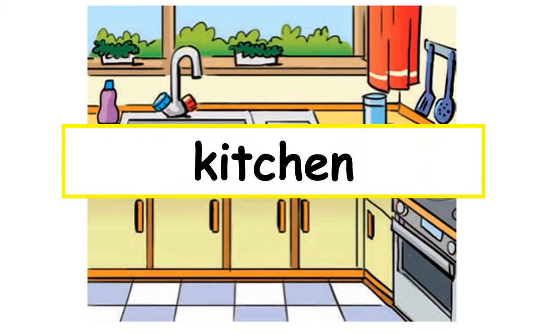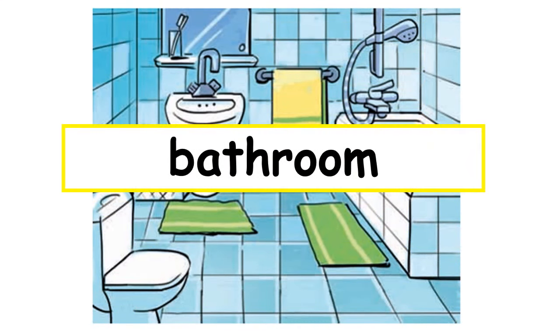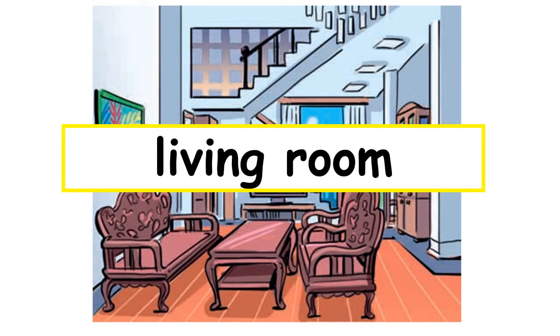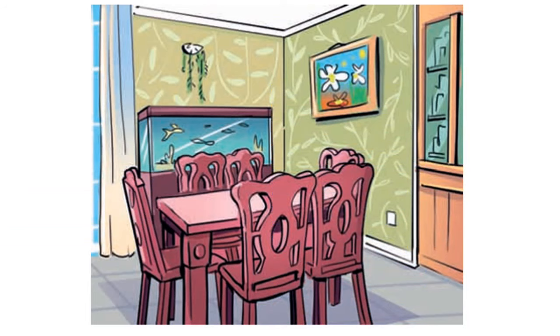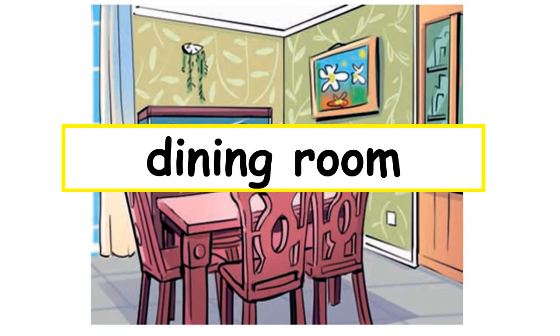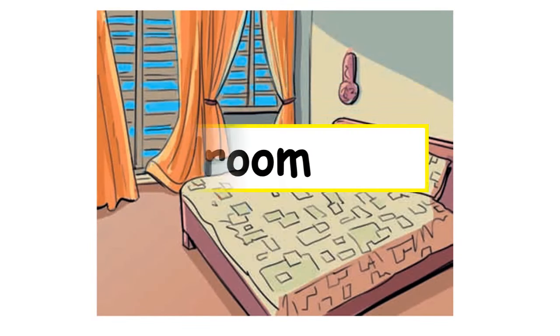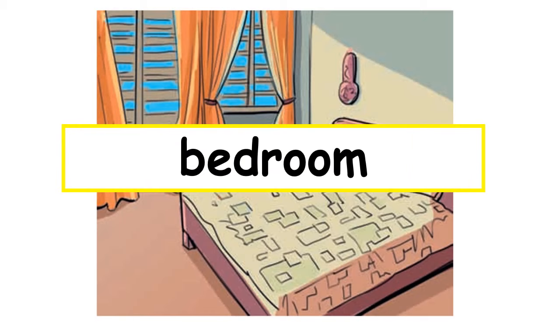Now you can tell me which room is behind the pictures. Yes, it's a kitchen. Next one — what is it? It's a bedroom. How about the next picture? It's a living room. And the next one — it's a dining room. Now see the last one — yes, it's a bedroom! I hope you got all the correct answers.